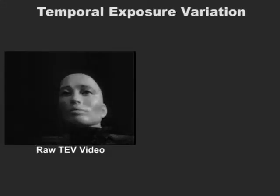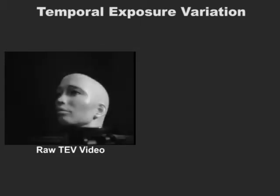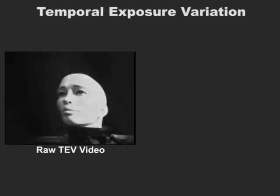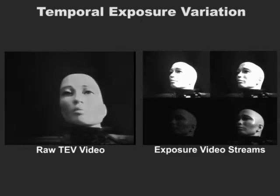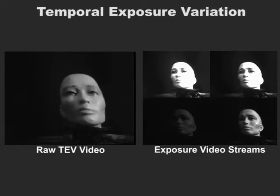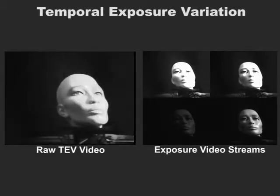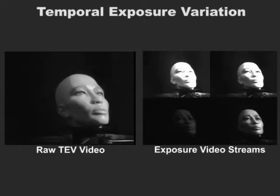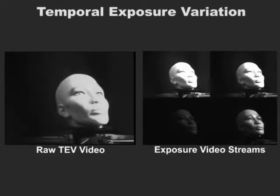Here, the system has been programmed to change the exposure of the scene over time. This type of video sequence can be used to generate multiple video streams, each with a different exposure setting. Alternatively, the captured video stream can be used to more robustly detect and identify objects in harsh lighting conditions.